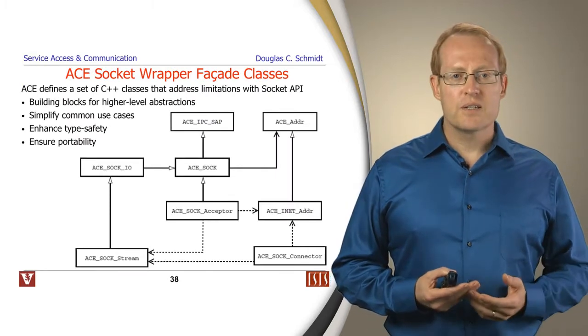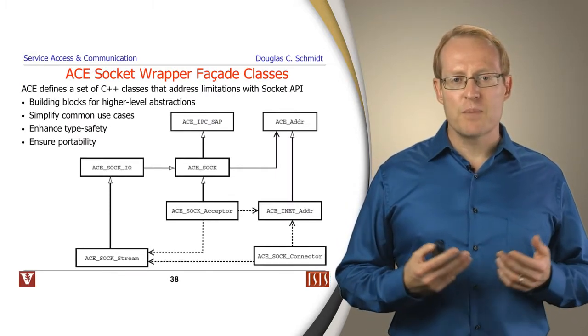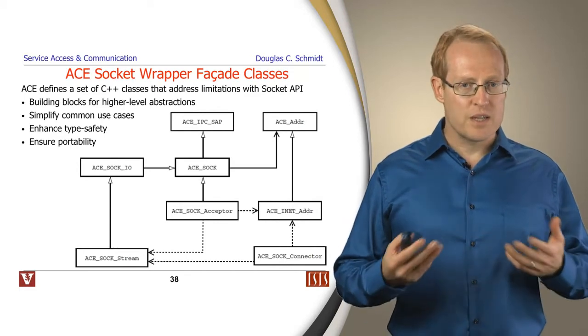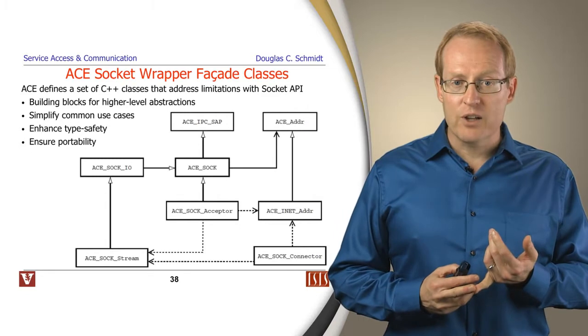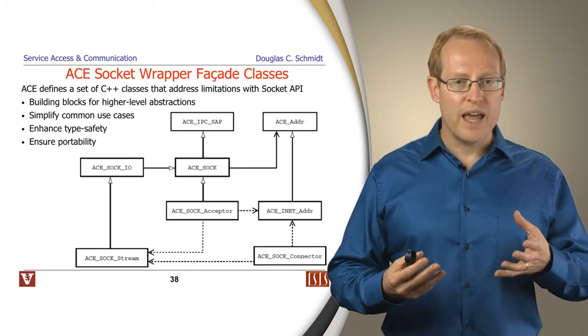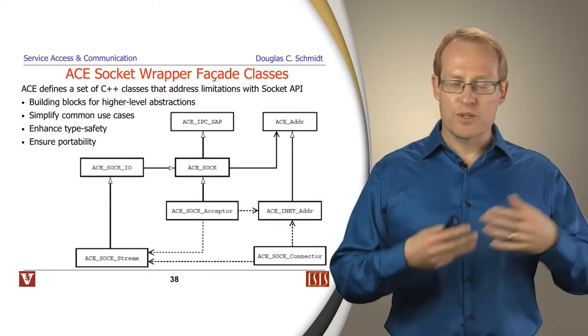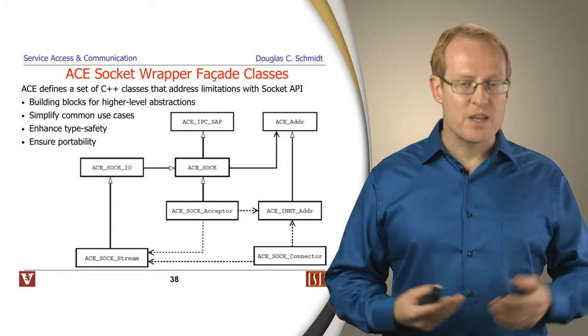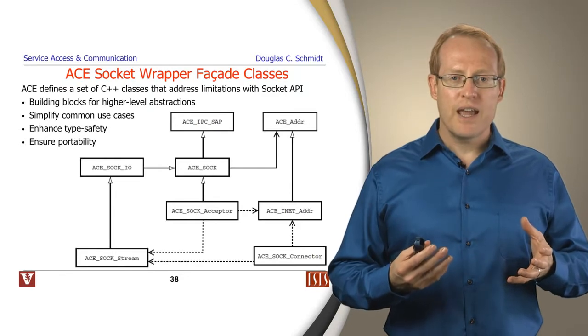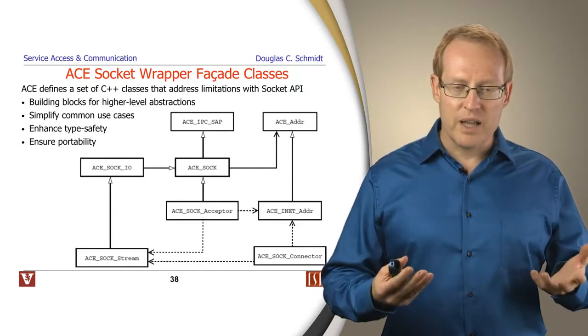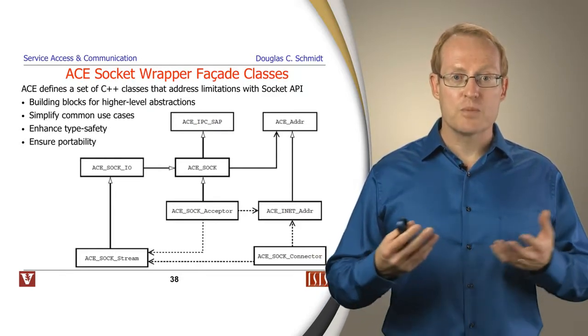The ACE socket wrapper facades define a set of C++ classes that work together to address some of the limitations with sockets. They define building blocks for higher level abstractions. You can plug and play these different wrapper facades for sockets or various types of interprocess communication mechanisms using parameterized types or inheritance and make it easy to build larger constructs out of smaller pieces.